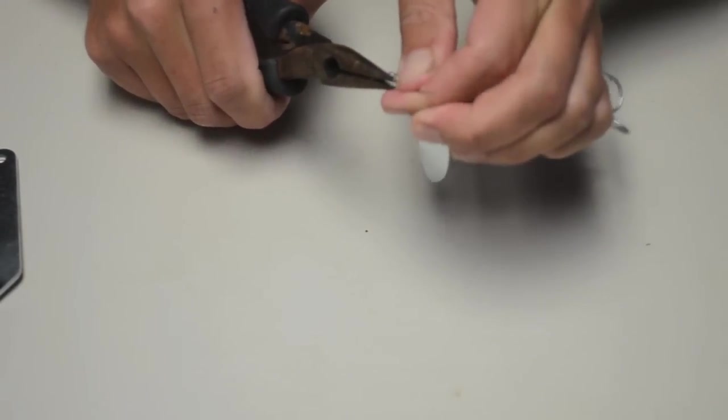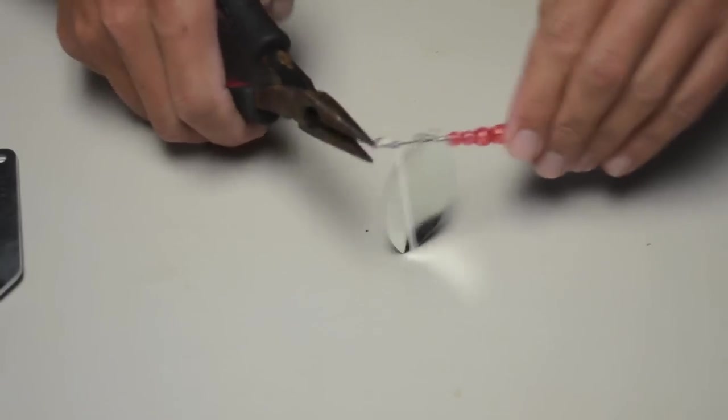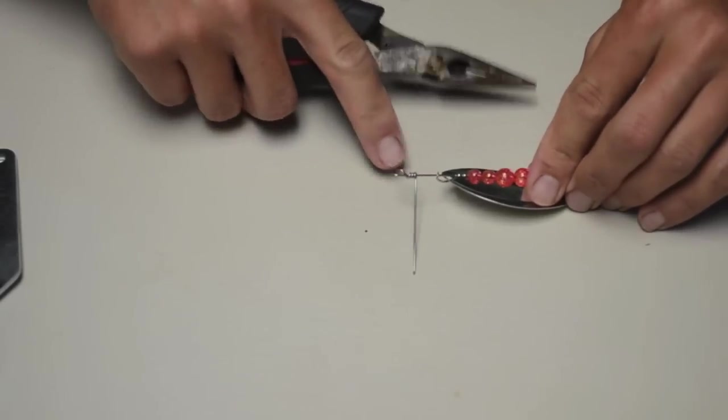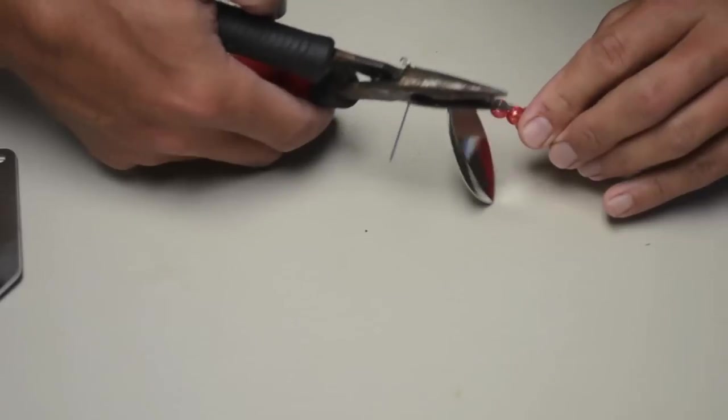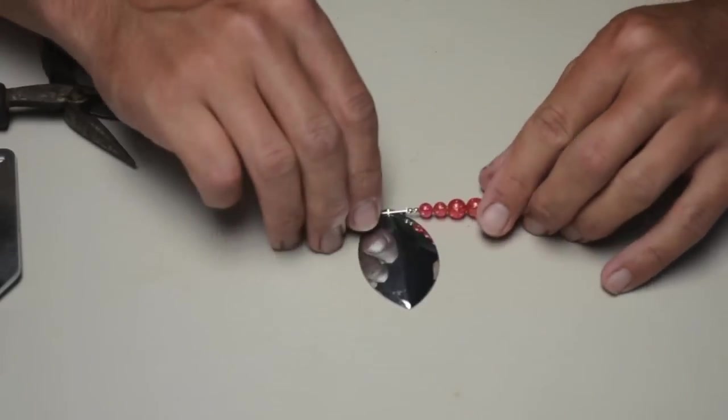There's machines that you can buy that do this for you, but I guess I'm just old fashioned. Alright. So then I just have this tag end I need to cut off if I'm not tearing up the fish's mouth. And I got a completed spinner.